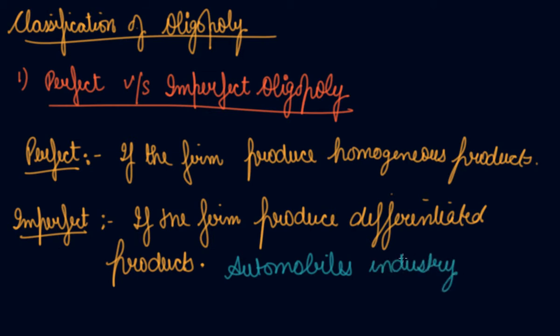Here we can have the example of the cement industry. Cement is the same product — a homogeneous product. There is no difference in the cement. You will get the same cement, but there are brands. They have done their branding so well that you want Lafarge cement only, or JK Cement only. That is the branding of the product, but they are selling a homogeneous product. And there are few sellers in the market.